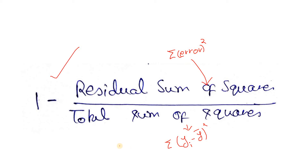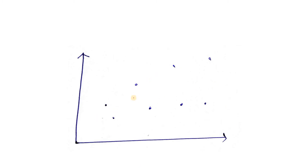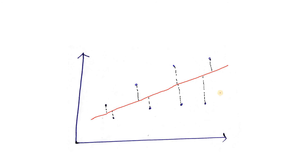How did this formula come about, and how does it signify the accuracy of a linear regression model? Let's understand it intuitively. The numerator term — residual sum of squares — is straightforward. Suppose we have some data points in two dimensions and we want to find a linear regression model. Suppose we have found a straight line that fits our data set. We then calculate the error: for each data point, the actual value minus the predicted value.